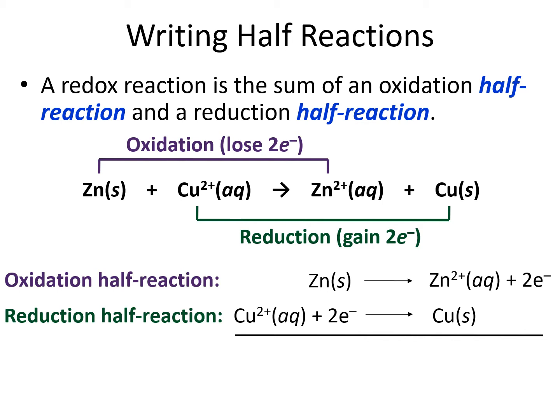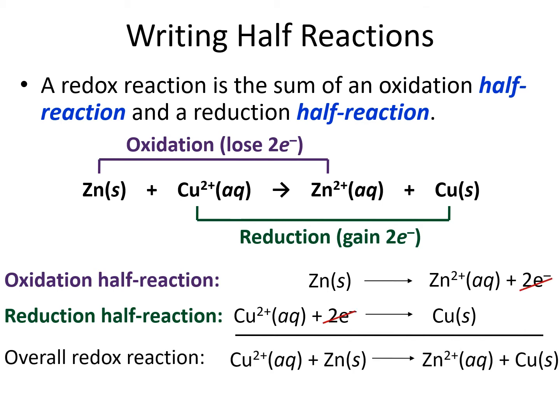We split our reaction into half-reaction equations. Now we're going to add them back together again. Anything on the left side of an arrow in a half-reaction equation gets brought down on the left side of the arrow in the overall equation. Anything on the right side of an arrow in a half-reaction equation gets brought down on the right side of the arrow in the overall equation. If something appears on both sides, we can cross it off. Since we have one equation where two electrons appear on the left side and one equation where two electrons appear on the right side, we would end up with two electrons on each side of our overall reaction, and they would cancel each other out.